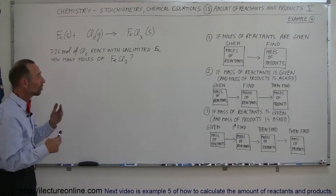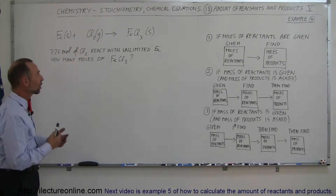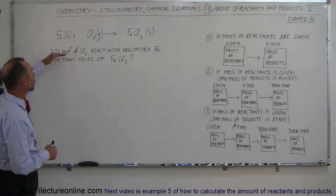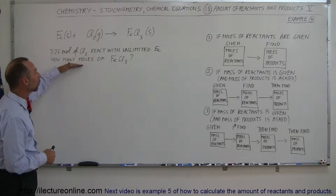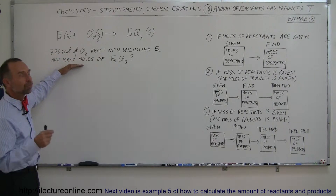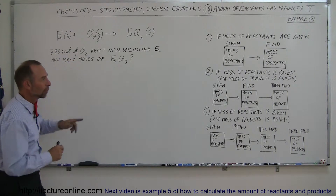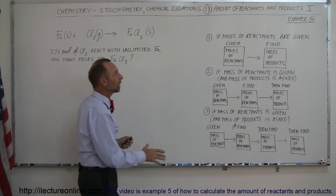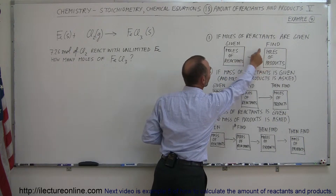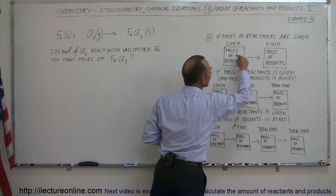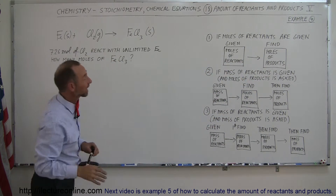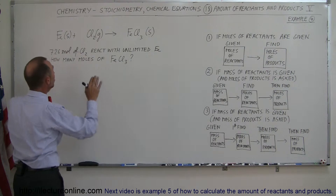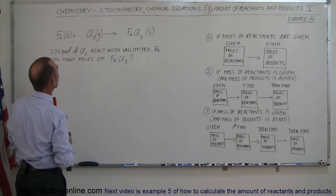So what situation are we dealing with here? They give us the number of moles of the reactant and they want to know the number of moles of the product, which means we're dealing with a one-step process. But before we can get started, we need to balance that equation.